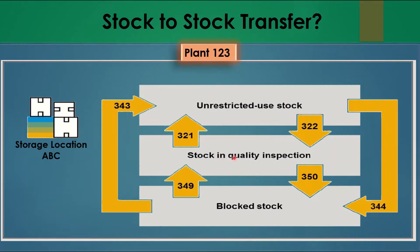Now we'll see how to move quality inspection stock to either block or unrestricted. During quality inspection, if you identify defective or damaged products, you can move that stock to block stock and later return it to the vendor. With movement type 350, you move from quality inspection to block stock. With movement type 321, you move from quality inspection to unrestricted stock.